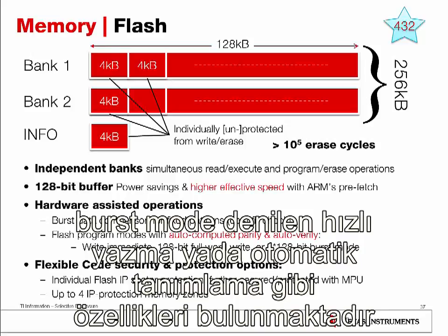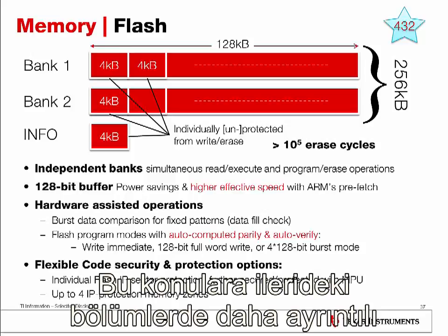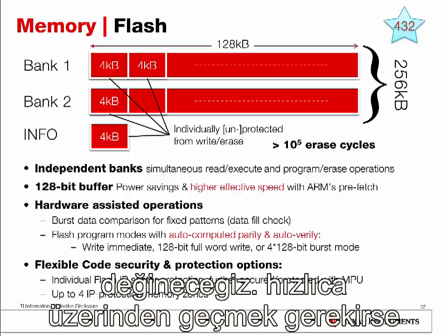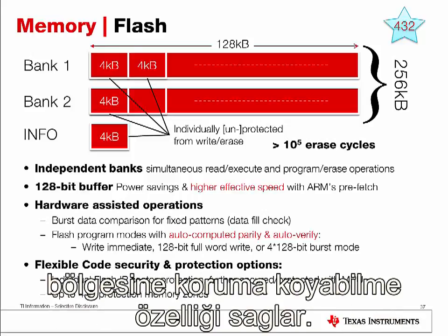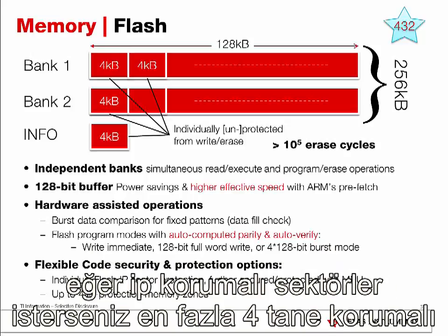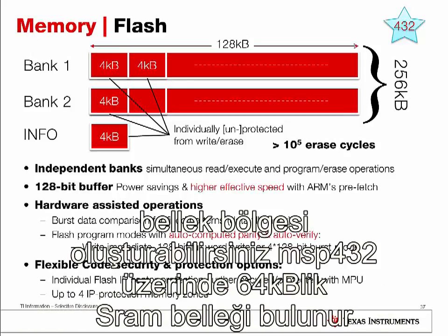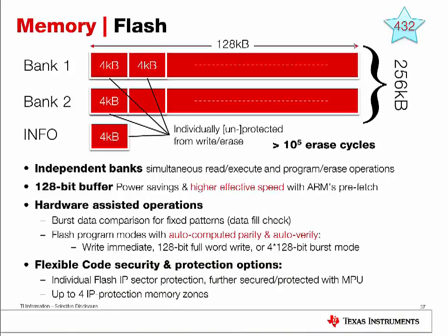In addition to the flash controller, the MSP432 also enables several flexible code security and protection options, which will be covered in later sections. You can use the ARM-provided memory protection unit to individually secure and protect each flash memory region from execution, writing, or reading accesses. Software IP vendors can also leverage up to four IP-protected memory areas to securely deliver black box IP solutions to another customer.